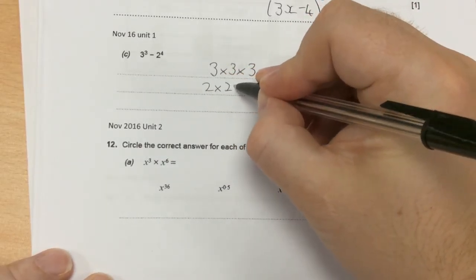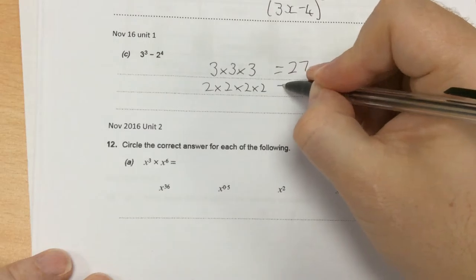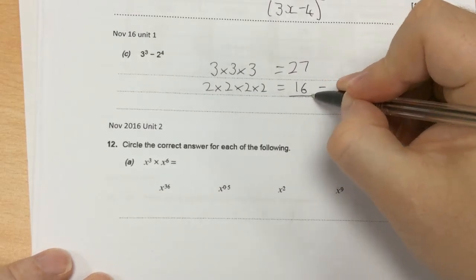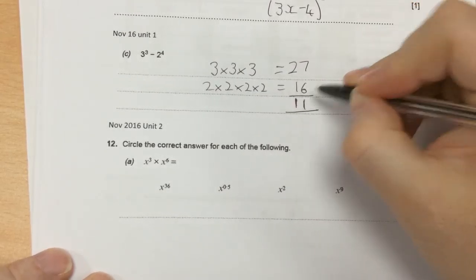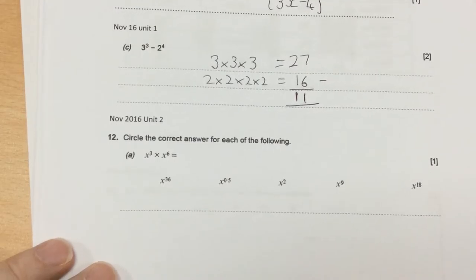And then we've taken away 2 times 2 times 2, which is 16. Let's subtract them. 27 take away 16 is 11.